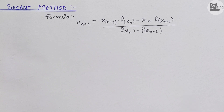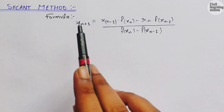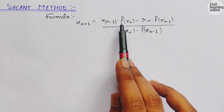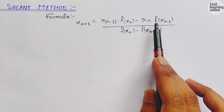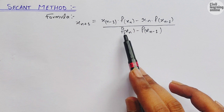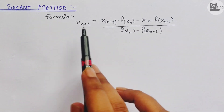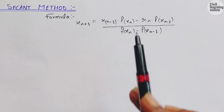Let's begin with the formula for the secant method. The formula is: x_(n+1) equals x_(n-1) times f(x_n) minus x_n times f(x_(n-1)), the whole divided by f(x_n) minus f(x_(n-1)).